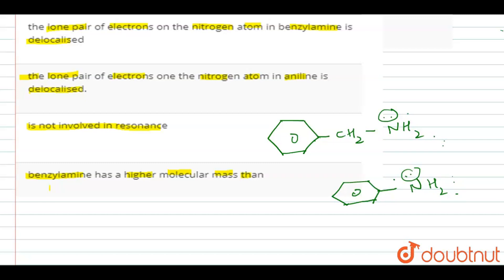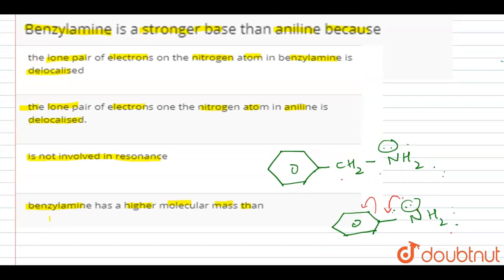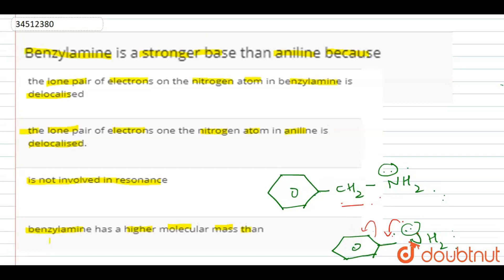So in both the structures, we can clearly see that in the second structure, our nitrogen lone pair is going to be in conjugation with the pi bonds present in the ring. Whereas here, there is no such case. Rather, there is going to be plus I effect which is shown by this CH2 group.